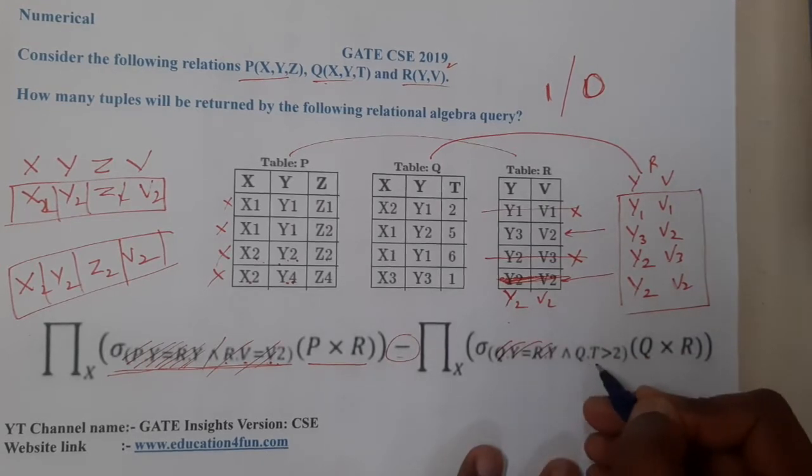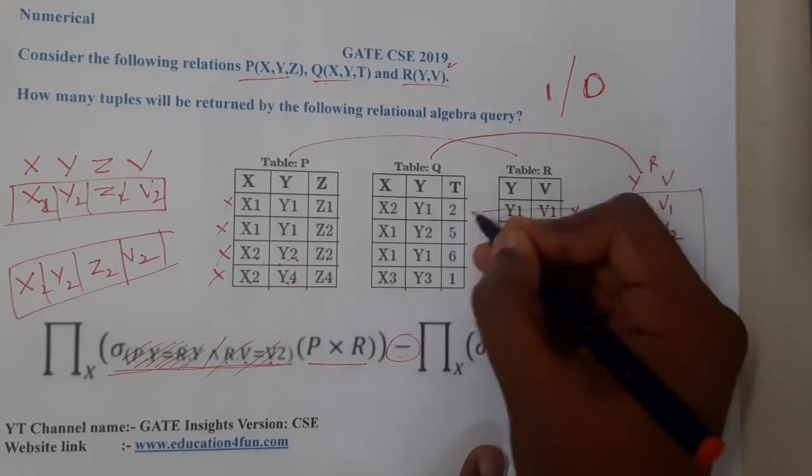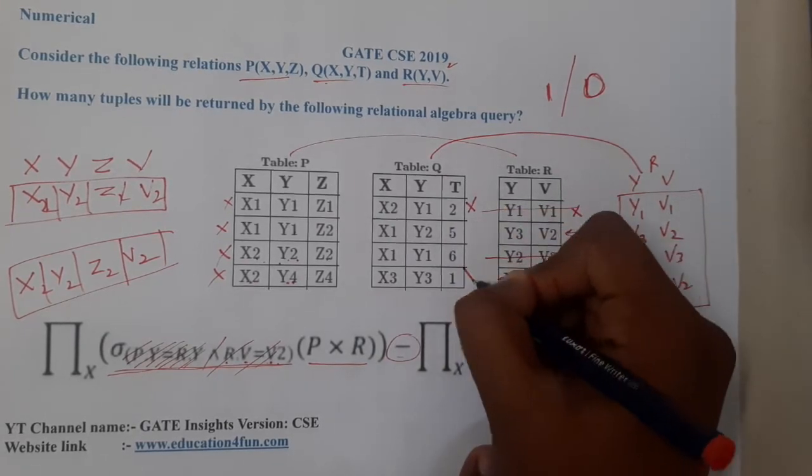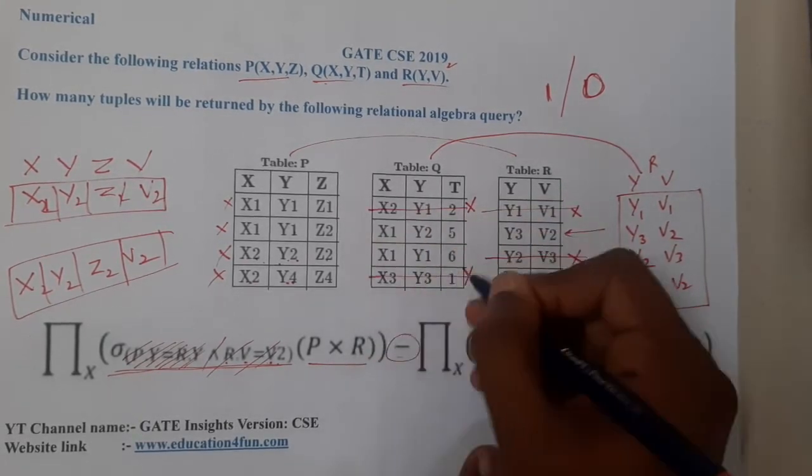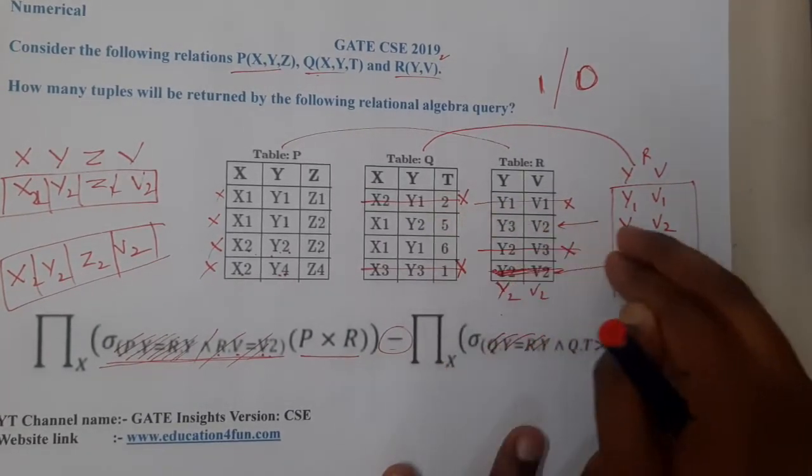That's what we are checking here. And we are checking Q.T is greater than 2. So Q.T should be greater than 2. So this will not get a chance and this will not get a chance. So indirectly we are left out with two rows here also. So now if I perform in between, I think I can analyze here only.